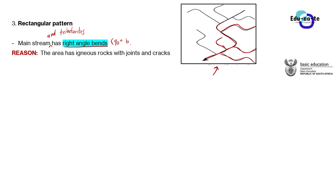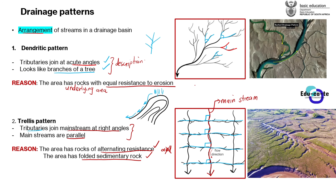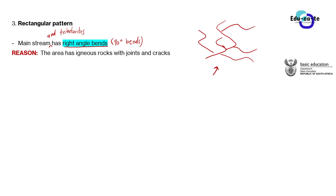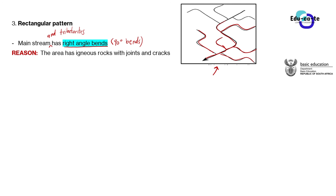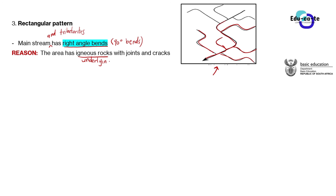You can say the rectangular pattern has right-angle bends or 90-degree bends — both are acceptable. Make sure you differentiate this from the trellis pattern: in a trellis pattern the tributaries are straight and join the mainstream at 90 degrees, but in the rectangular pattern the mainstream itself has right-angle bends. The reason is that the area has igneous rocks with joints and cracks.